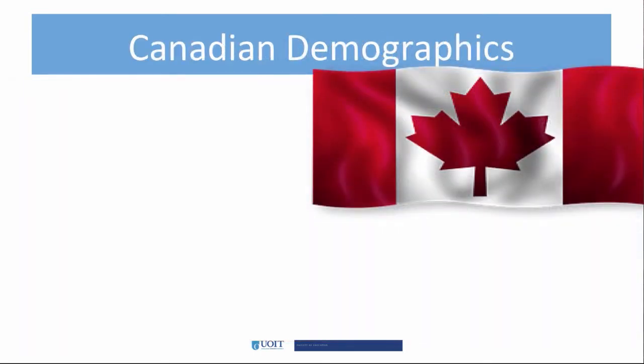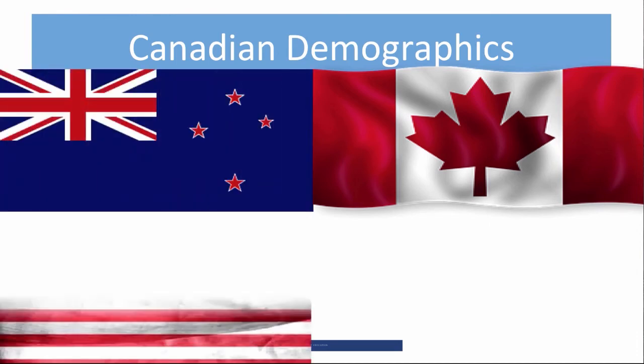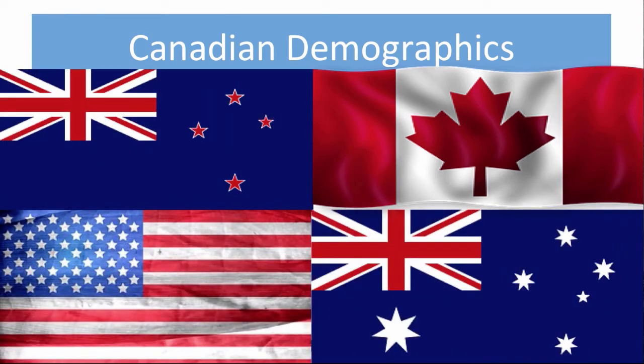It's important to know that the cohorts have the same names in Canada as in New Zealand, the US, and Australia. In the US, the boom started a year earlier and ended in 1964. In New Zealand and Australia, women didn't have as many children, and women were slower to move into the workforce than their North American counterparts. These were the only four countries where a boom happened.